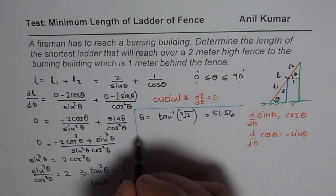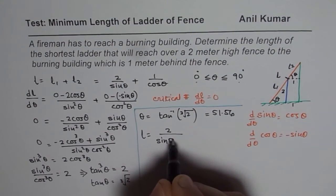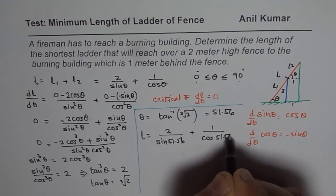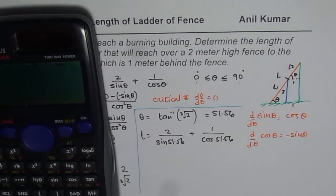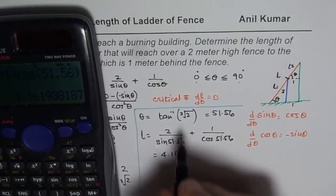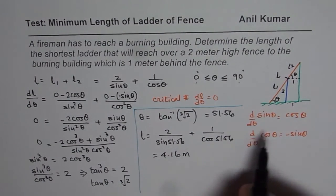So let us find the length now for this particular angle. So L equals to 2 over sin 51.56 plus 1 over cos 51.56. So we have 2 over sin 51.56 equals to. So that gives us 4.16 and the units are in meters.